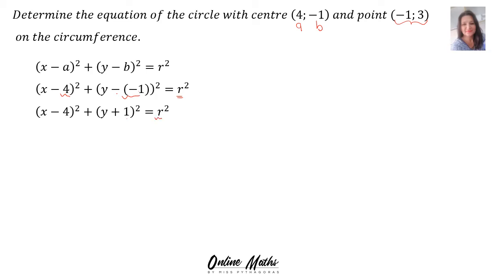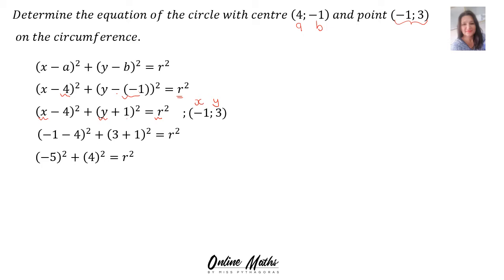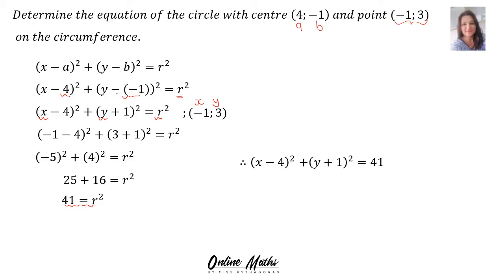To find r squared, we use the point (-1, 3) on the circumference. Substituting x = -1 and y = 3: (-1 minus 4) squared plus (3 plus 1) squared equals r squared. That gives negative 5 squared plus 4 squared equals r squared, so 25 plus 16 equals r squared, giving r squared = 41. Don't take the square root — you want r squared because the formula has r squared in it. Therefore the equation is x minus 4 squared plus y plus 1 squared equals 41.